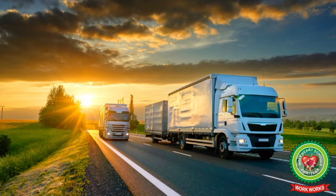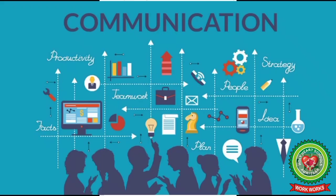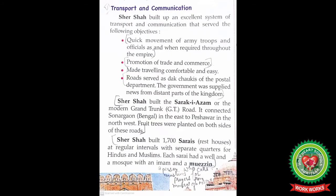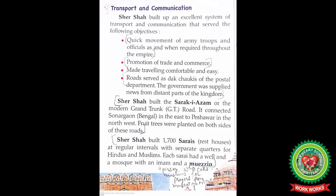Sher Shah built an excellent system of transport and communication throughout his empire. The objectives were: soldiers and officials could move quickly when required; trade and commerce were promoted through good communication; effective transport made traveling comfortable and easy. Roads also served as the dak chowkies of the postal department.